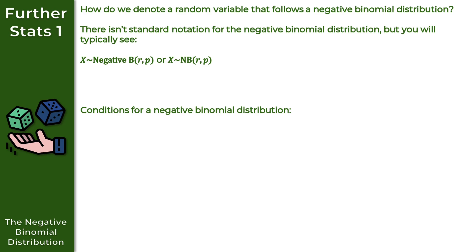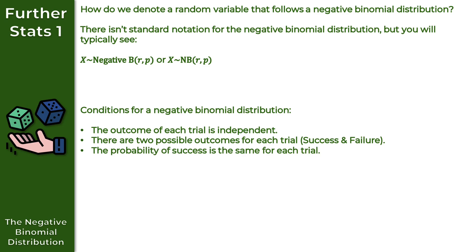Let's talk about the conditions required for a negative binomial distribution. The good news is you're already familiar with all three conditions because they are the same three as for a geometric distribution: the outcome of each trial is independent; there are two possible outcomes for each trial, which we denote as success and failure; and the probability of success is the same for each trial.